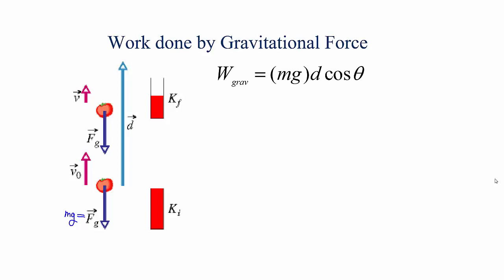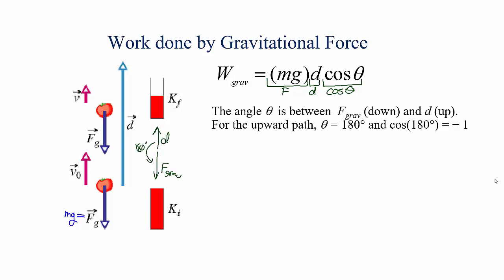For the gravitational force, for something that's moving upward a distance d, the work done by gravity is the gravitational force mg times the distance d, times the cosine of the angle between the force and the motion. Here, the force of gravity is straight down and the motion is straight up, so the angle between the force and the displacement vector is 180 degrees.